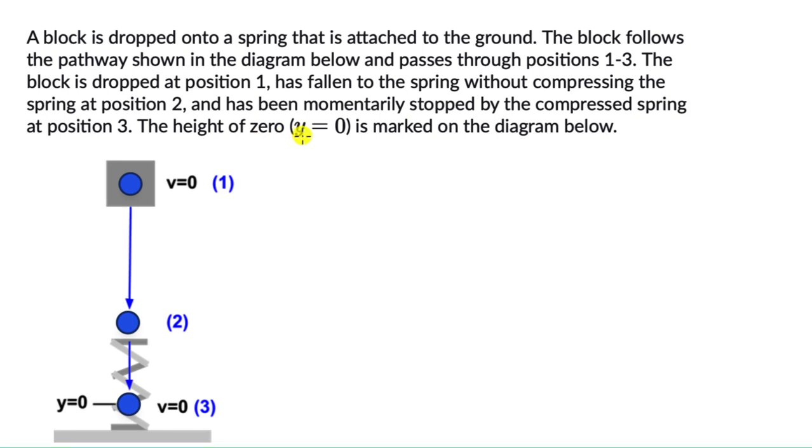The height of zero, y equals 0, is marked on the diagram below. So the height is at this point, position 3, when the spring is completely compressed.